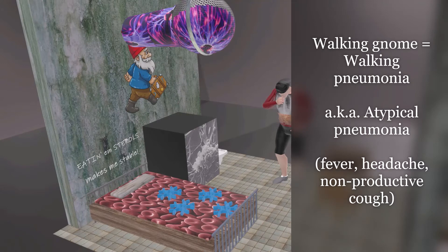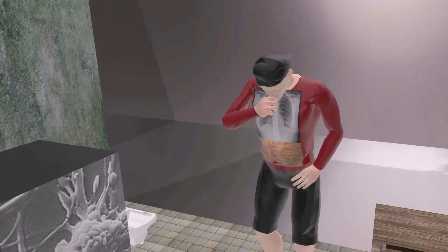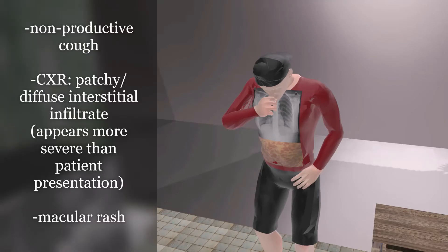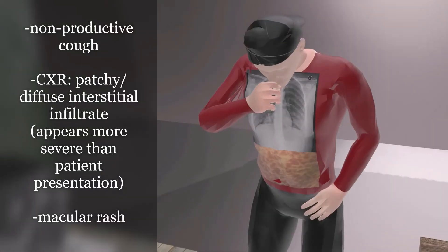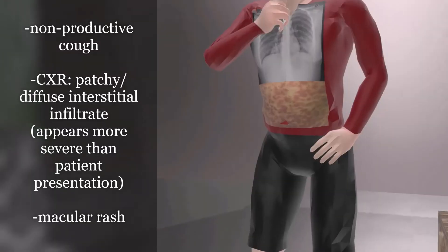The prisoner is coughing, reminding us of the non-productive cough. On his chest we see a chest X-ray of a patient with Mycoplasma pneumonia infection, described as a patchy diffuse interstitial infiltrate on CXR. Notably, the CXR looks worse than the patient's clinical presentation would actually suggest.